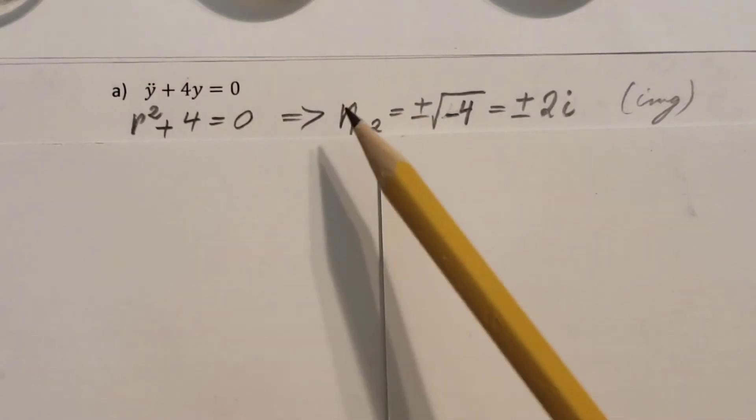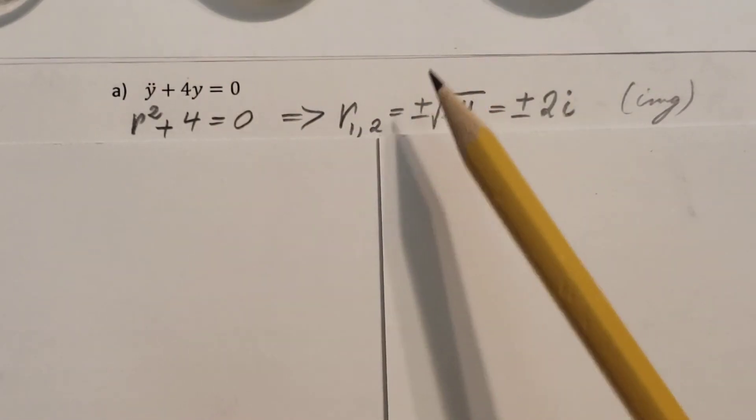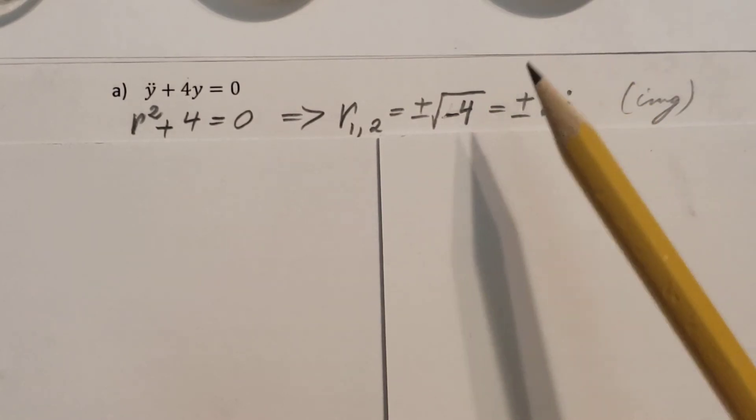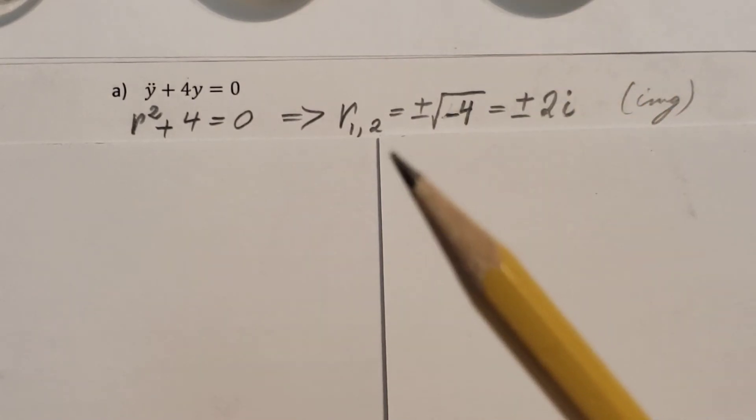Let's find the roots. r1 and r2 equals plus minus square root negative 4, which will give us plus minus 2i, imaginary numbers, complex numbers.